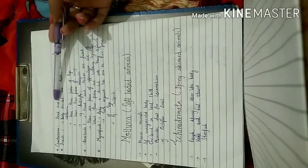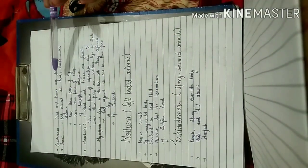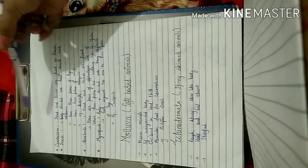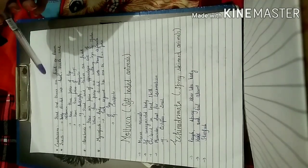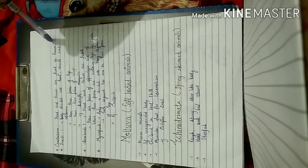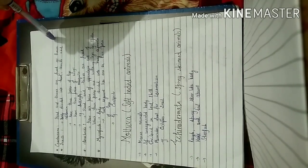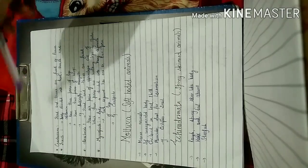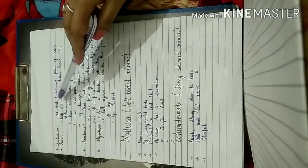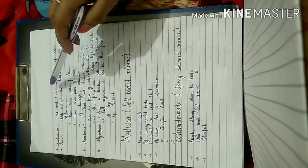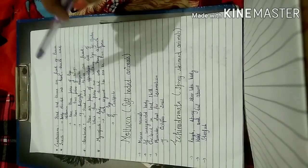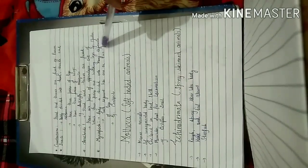What are crustaceans? In crustaceans, the head and thorax are fused — such as in the prawn. In these animals, the head and thorax region are fused together.